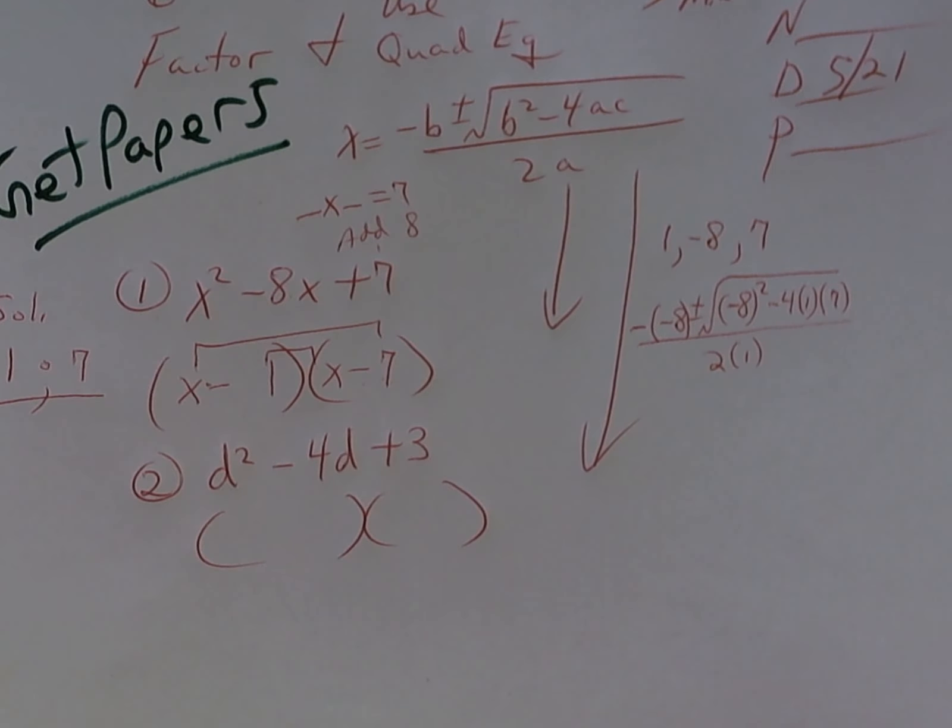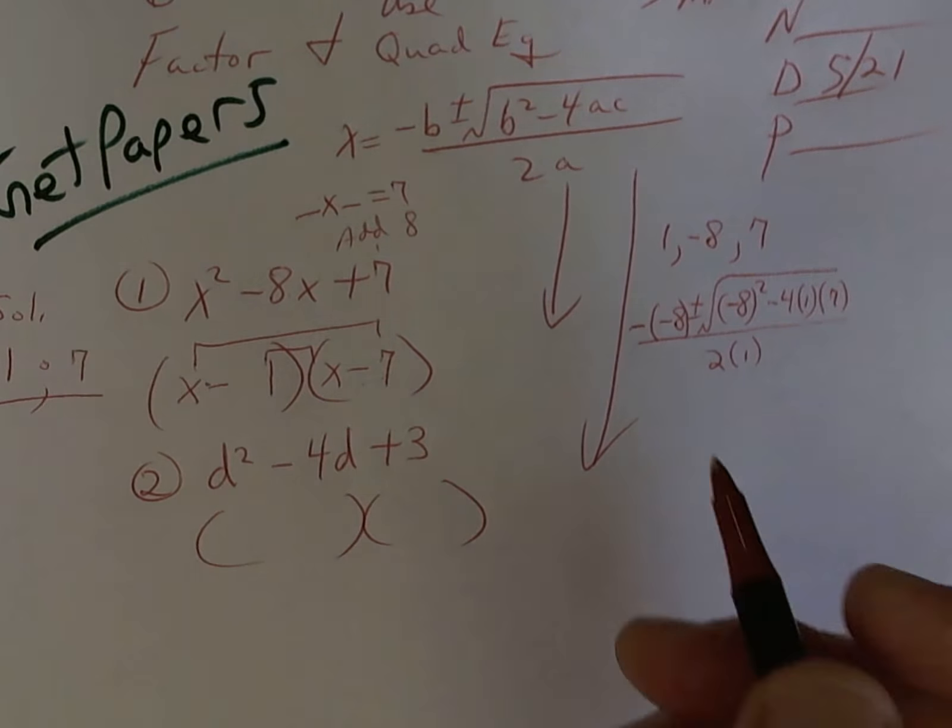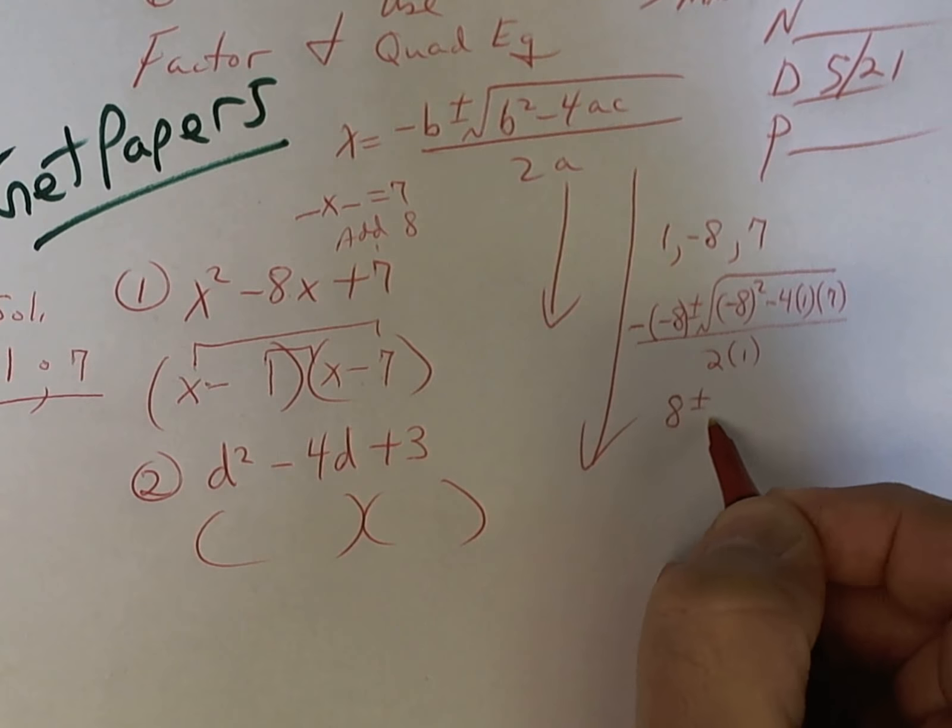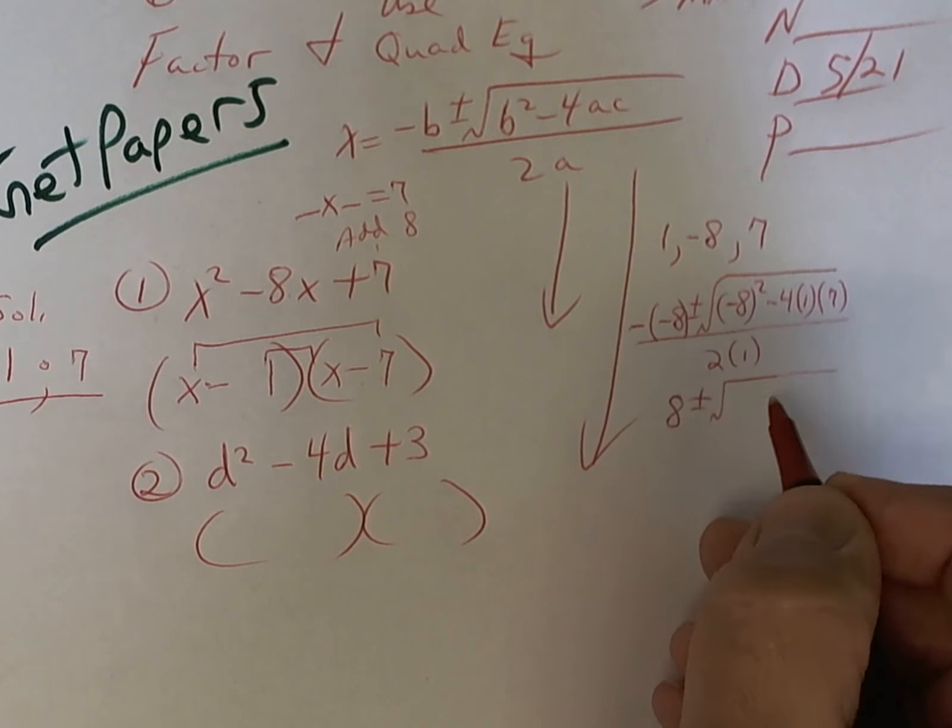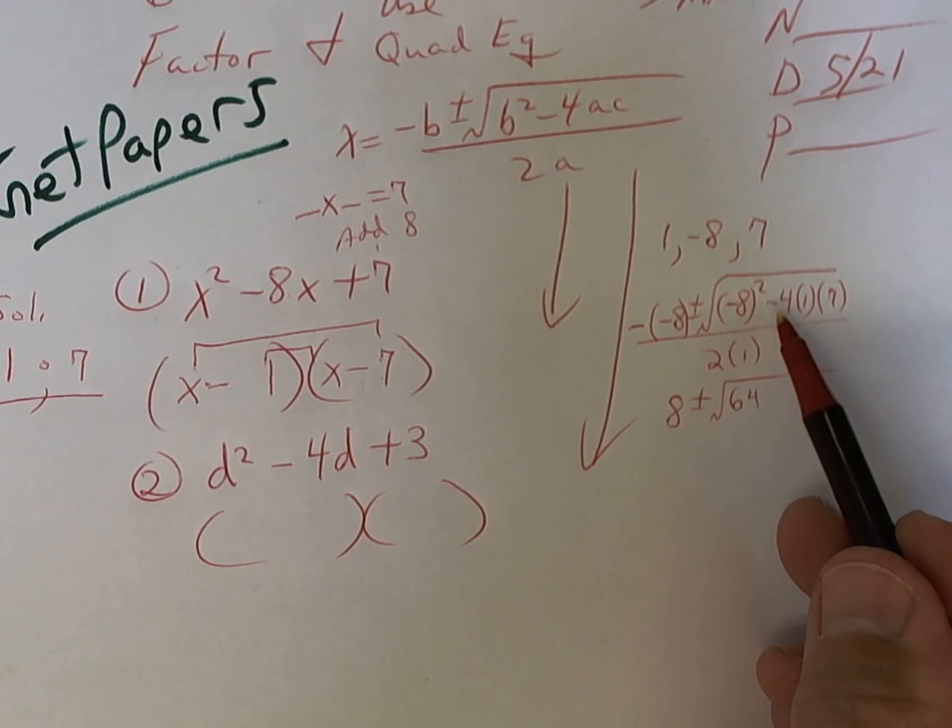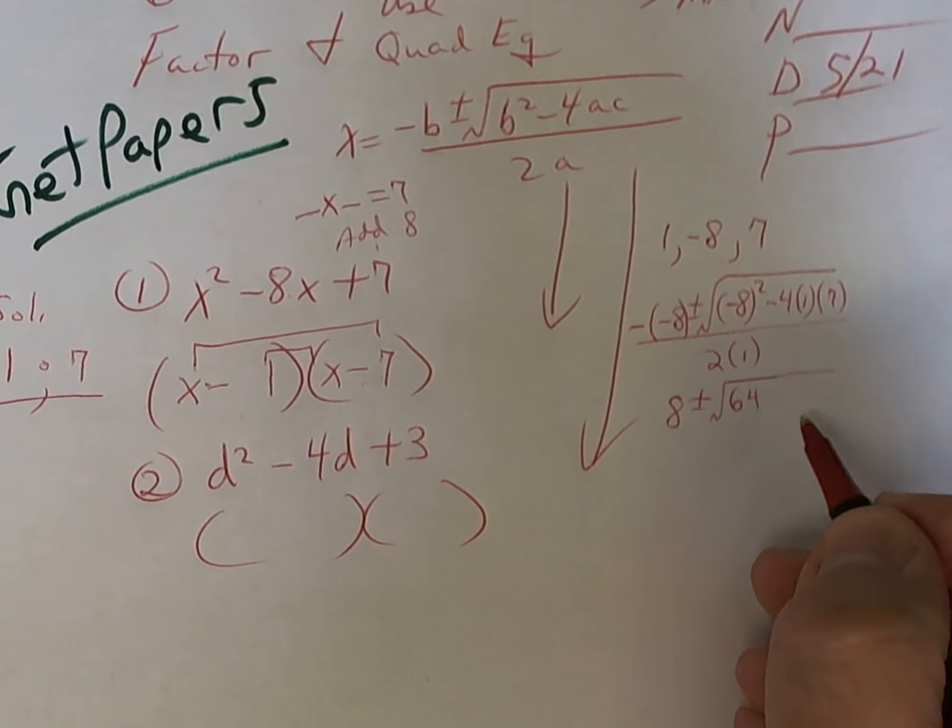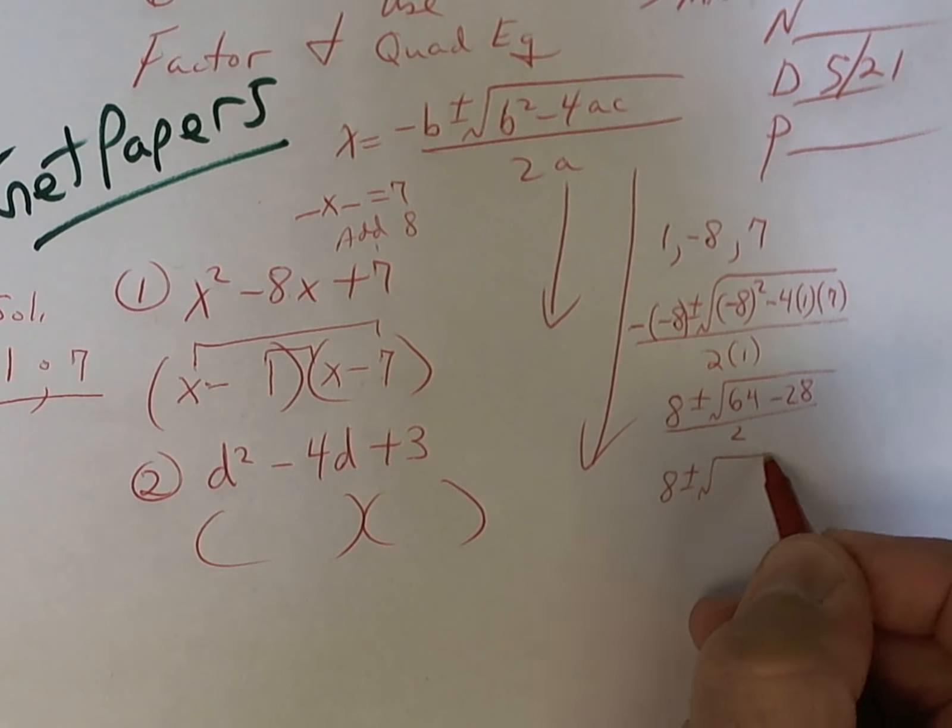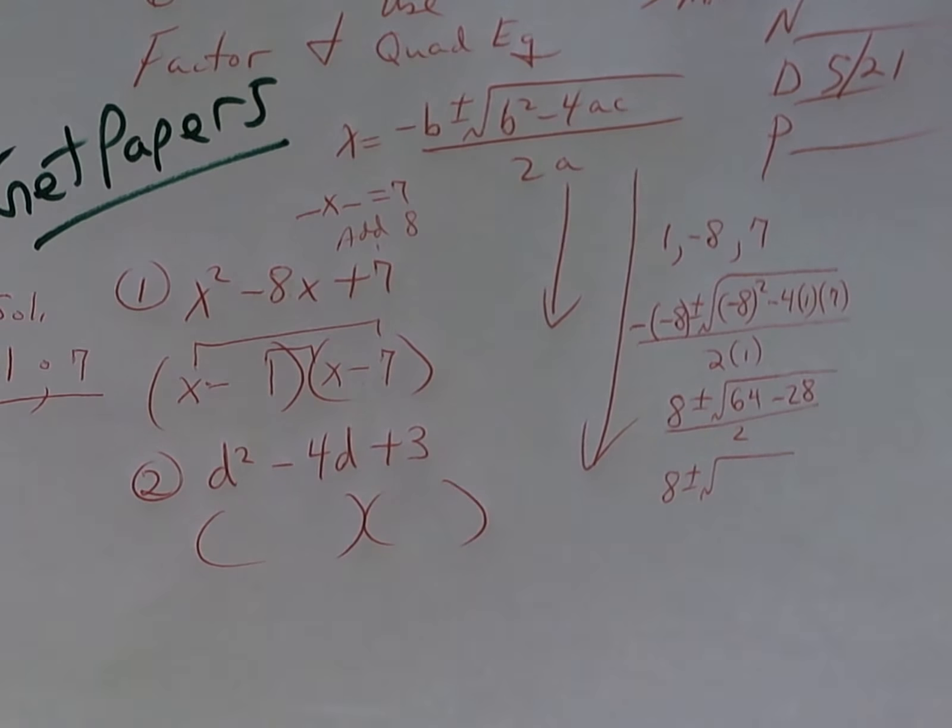All right, if you're with me, the next thing I would do is a negative times a negative. Kyle is going to make that a positive eight. A negative eight times a negative eight is a positive sixty-four. You only have one negative, so it's going to be a negative twenty-eight. When you take sixty-four and subtract twenty-eight, I think it's thirty-six.